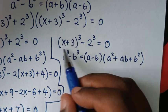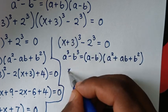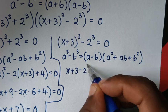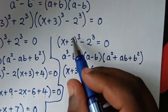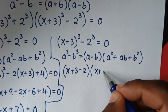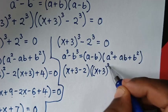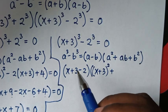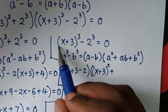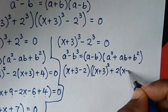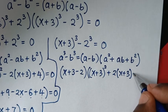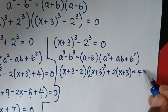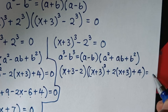Applying this: (x + 3 − 2) times [(x + 3)² + (x + 3) times 2, which is 2(x + 3), plus 2², which is 4] equals 0.